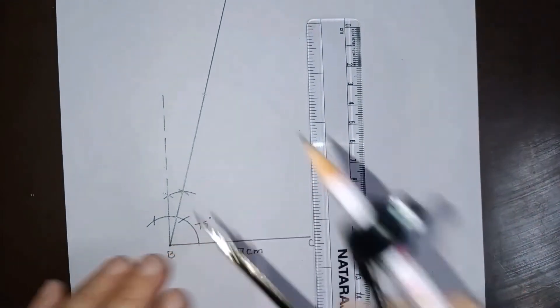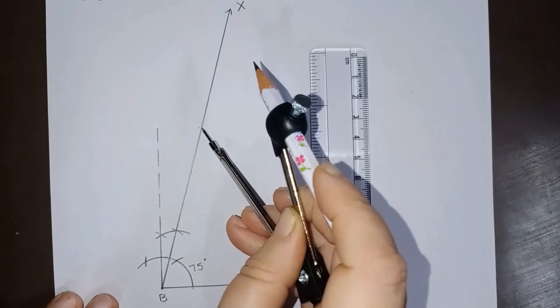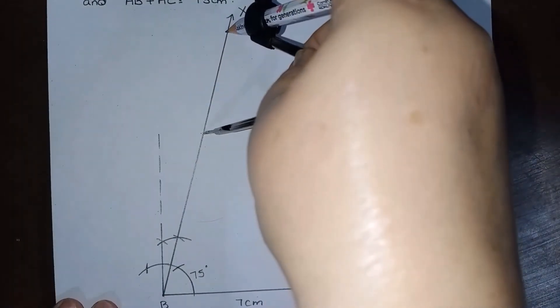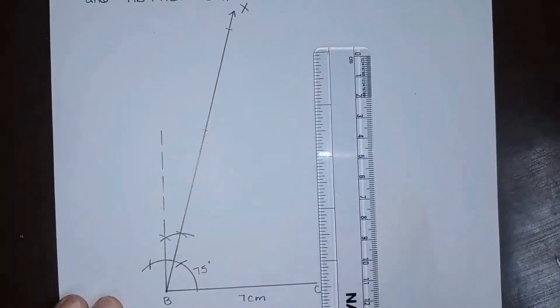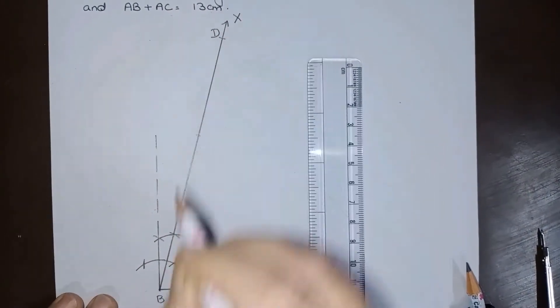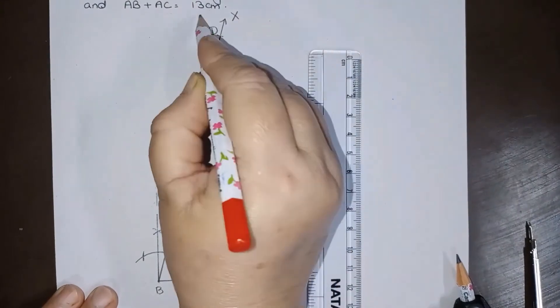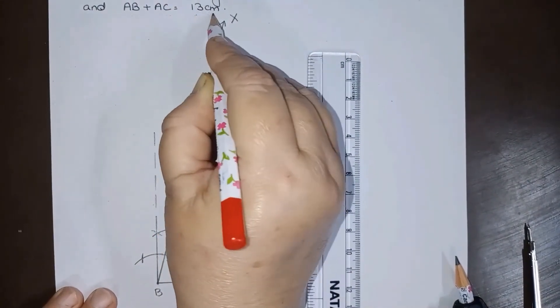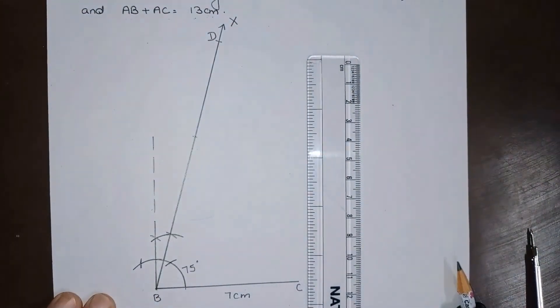Now this is 5 cm. So 8 plus 5 is 13 cm. Now see what I have done: on ray BX I have taken a point D such that this BD is 13 cm, which is the sum of the other two sides.